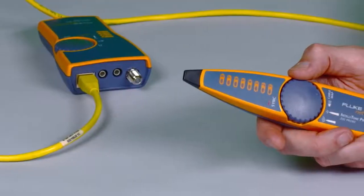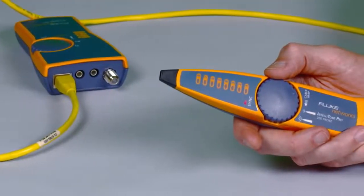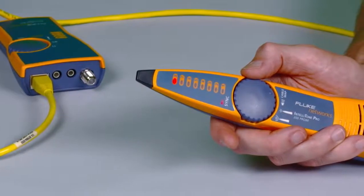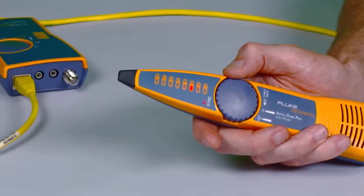Validate wire maps in a flash, finding the most common wiring faults on twisted pair cabling, such as shorts, opens, and crossed pairs.